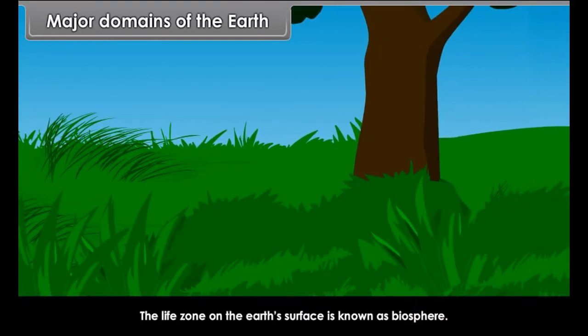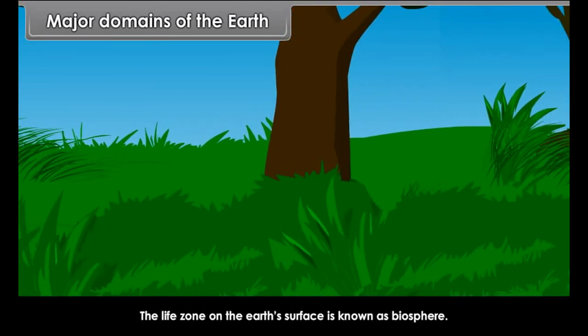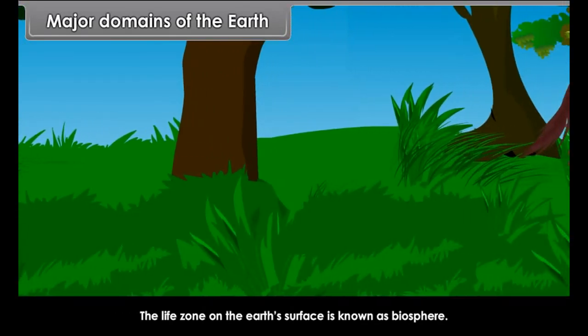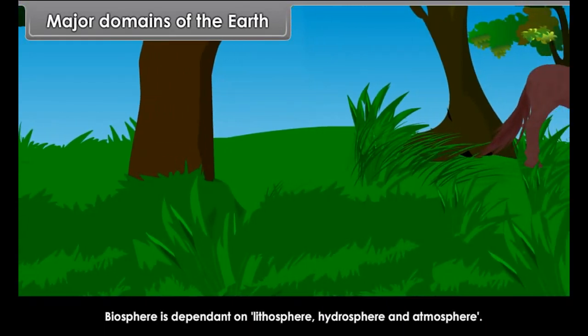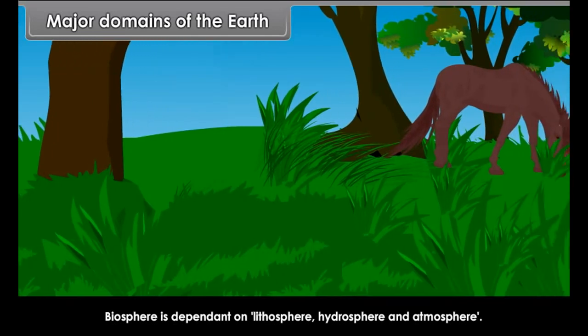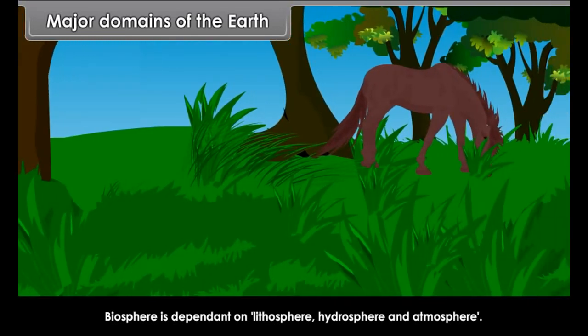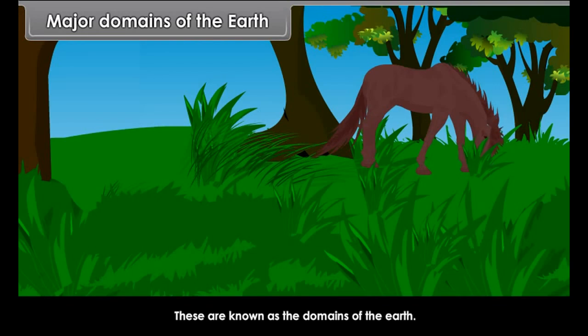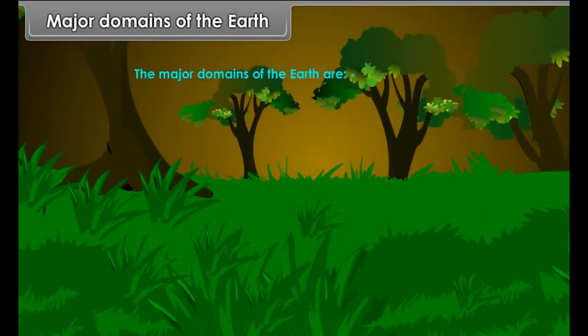The life zone on the earth's surface is known as biosphere. Biosphere is dependent on lithosphere, hydrosphere and atmosphere. These are known as the domains of the earth. The major domains of the earth are lithosphere, atmosphere, hydrosphere, and biosphere.